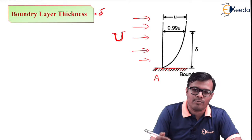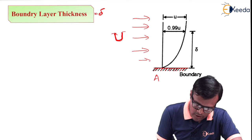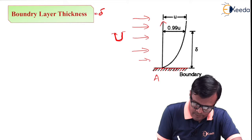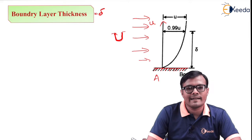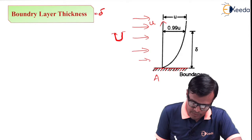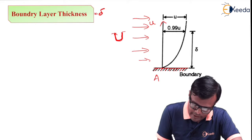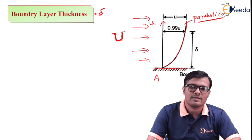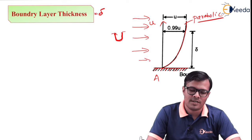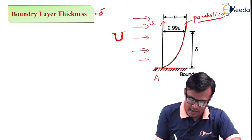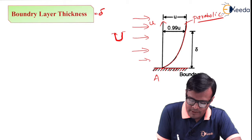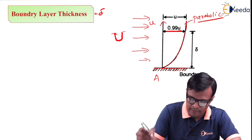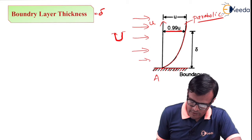If we talk about the distribution of velocity along the y-axis, with U plotted, then it is clear that the curve will start from zero and go on increasing, parabolic in nature. At a certain stage, the velocity will become 99% of U, which is 99% of the free stream velocity.